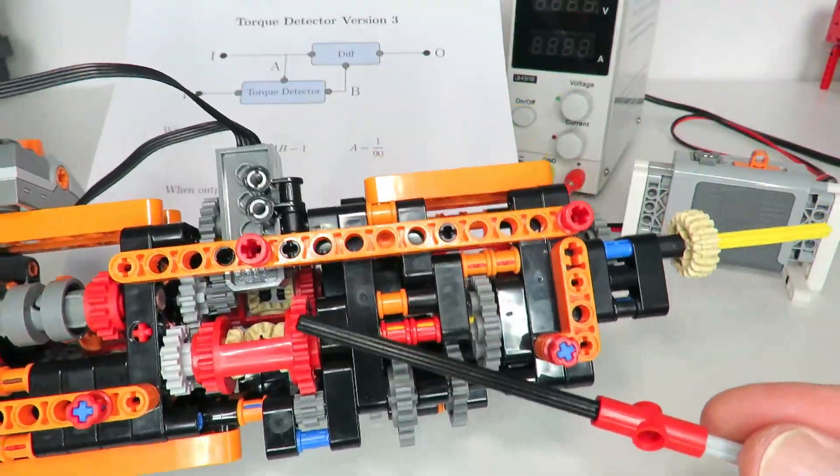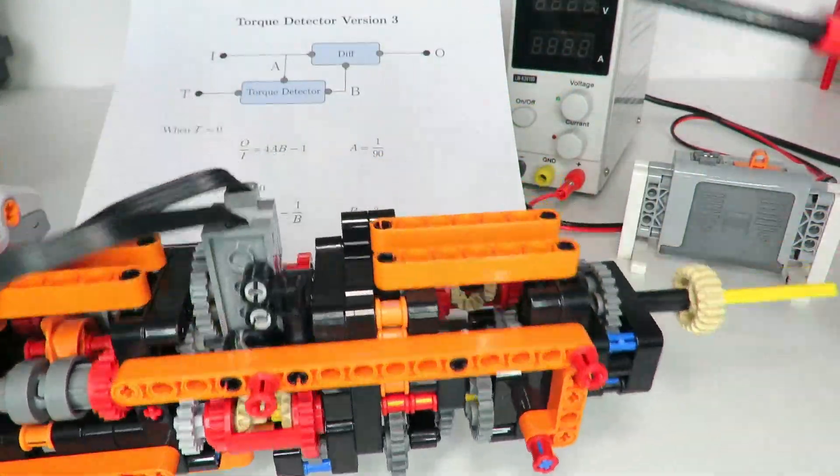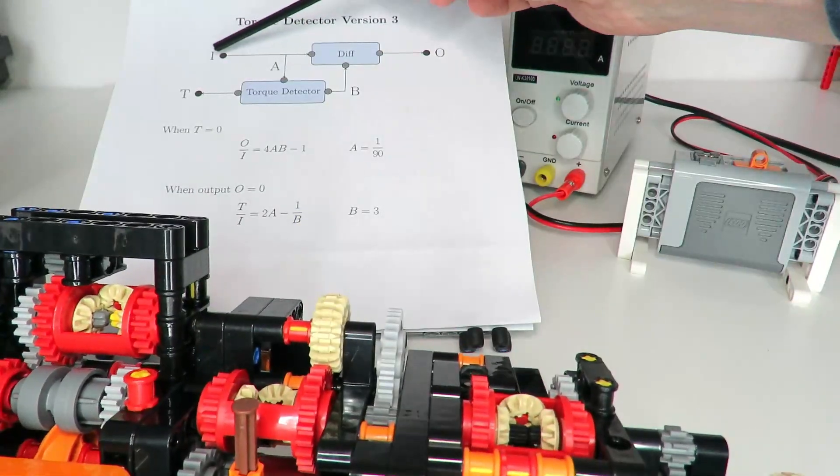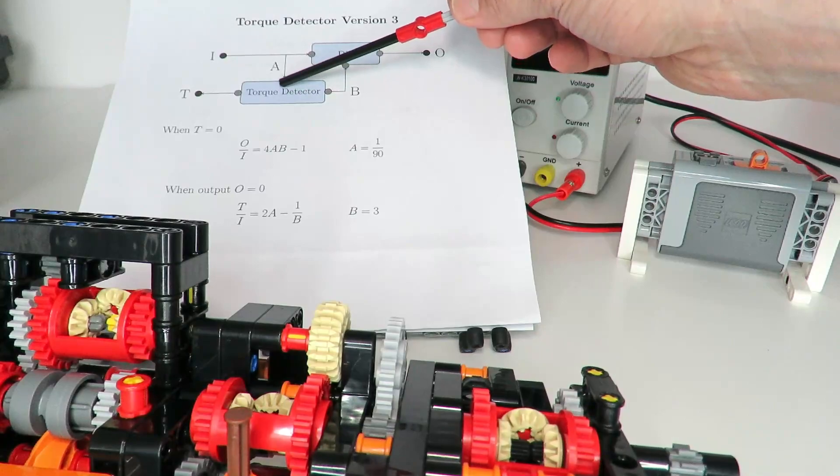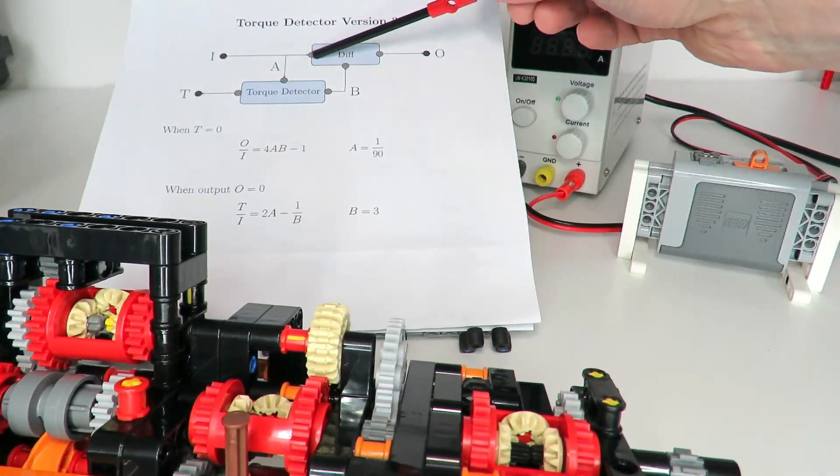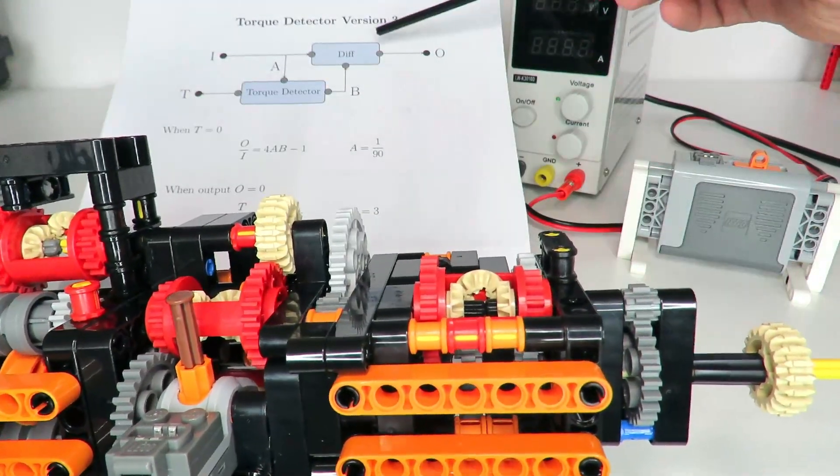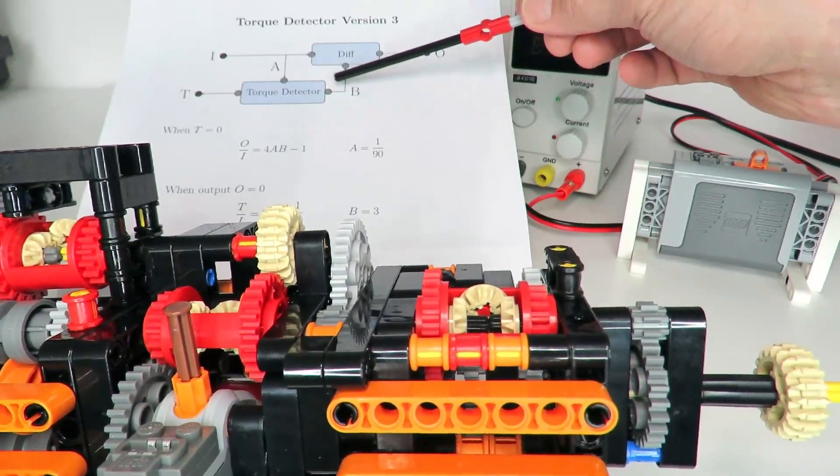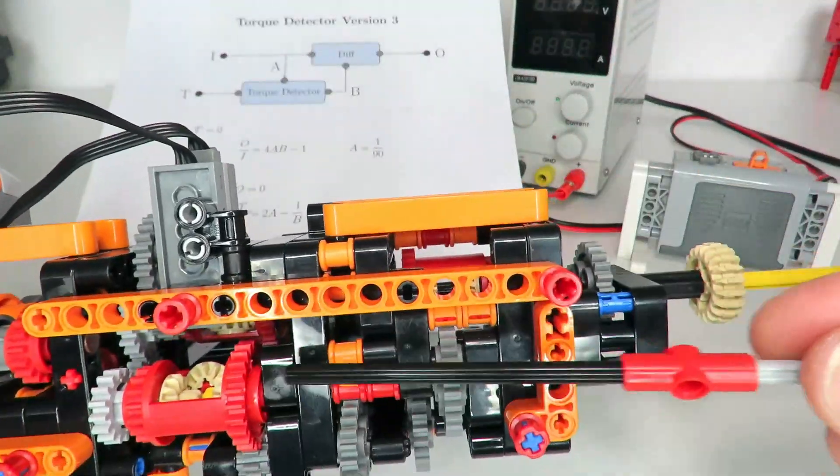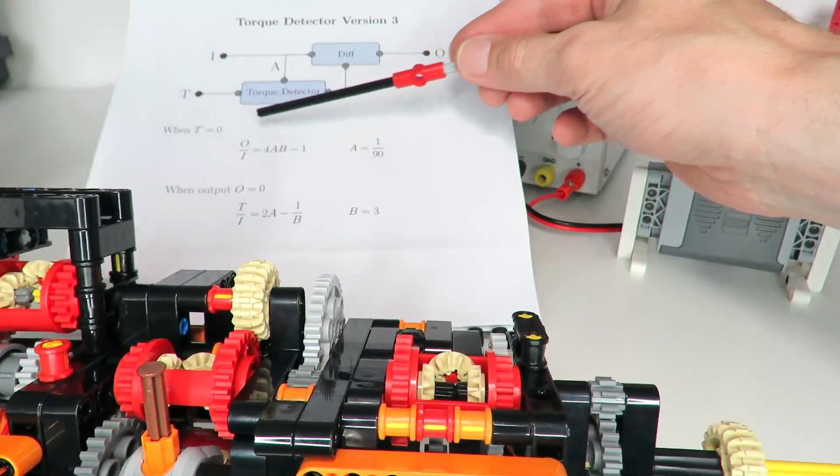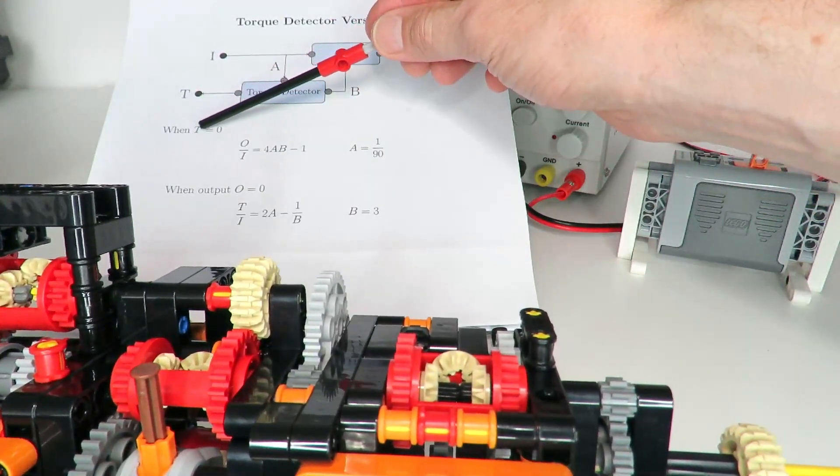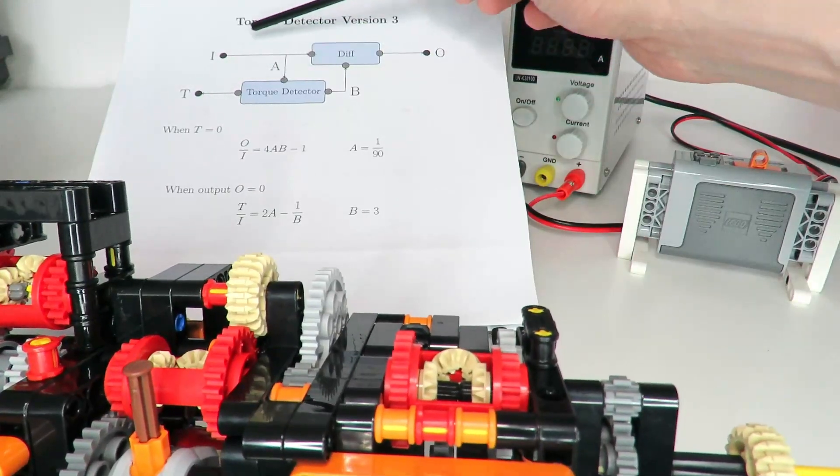This input goes through a summing differential which is shown there, and we've got our torque detection differential underneath. The way this is laid out, I've got a gearing ratio of A between the input here to the torque detector - this is pretty much a one-to-one into that differential. Then I've got a gearing ratio of B from the output of the torque detector back to that differential here.